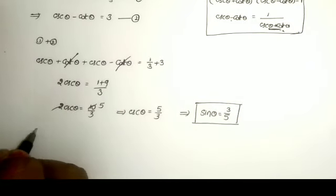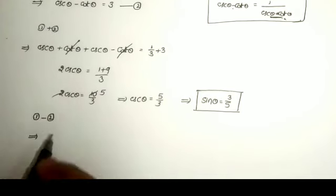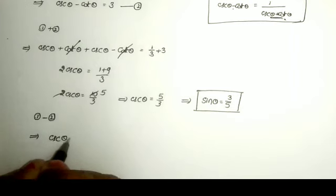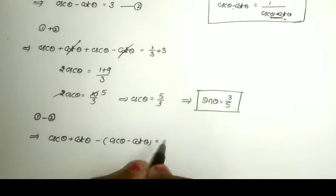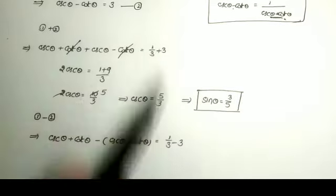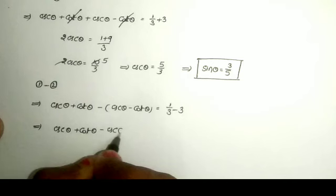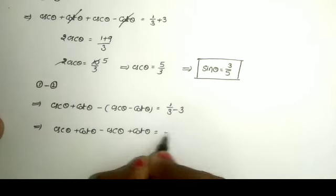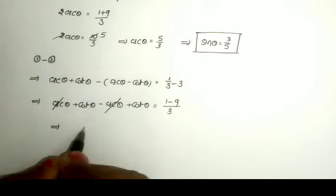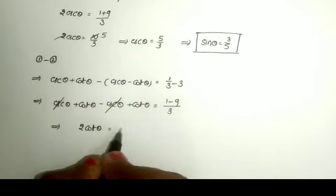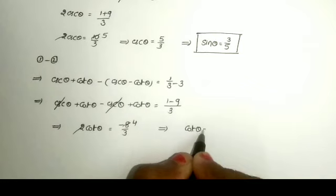Now taking equation 1 minus equation 2: cosecant theta plus cot theta minus (cosecant theta minus cot theta). Here cosecant theta minus cosecant theta gets cancelled, leaving 2 cot theta. On the right side: 1/3 minus 3. Taking LCM, that is 1 minus 9 divided by 3, equals minus 8 by 3. So 2 cot theta equals minus 8 by 3, giving cot theta equals minus 4 by 3.